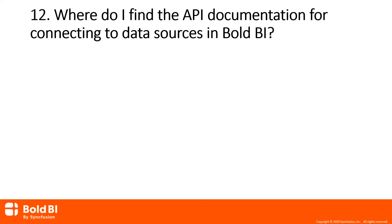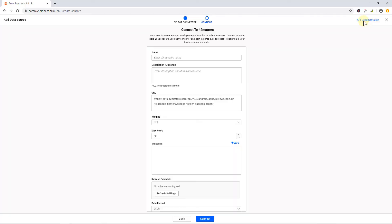And now for our final question of the day, question number 12: where do I find the API documentation for connecting to data sources in Bold BI? You can find the API documentation of your data sources in the top right corner of the Bold BI data source configuration panel.